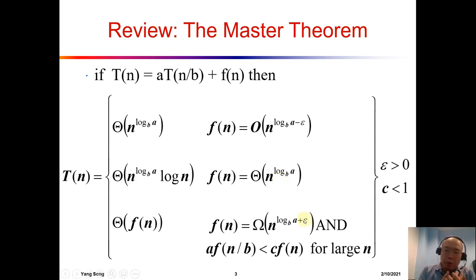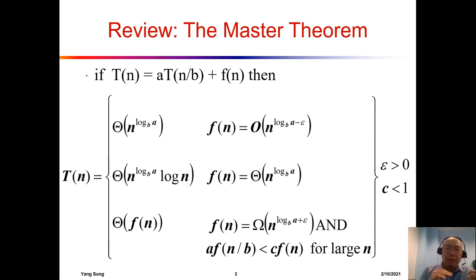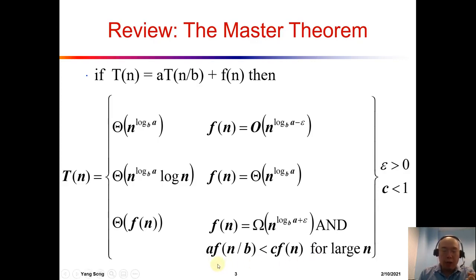For case three, it will be a little bit tricky. After you see, for the first part, if f(n) is Omega of n^(log_b(a)), this means f(n) grows faster than n^(log_b(a)). And after that, you also have to prove an additional condition in order to really use case three.